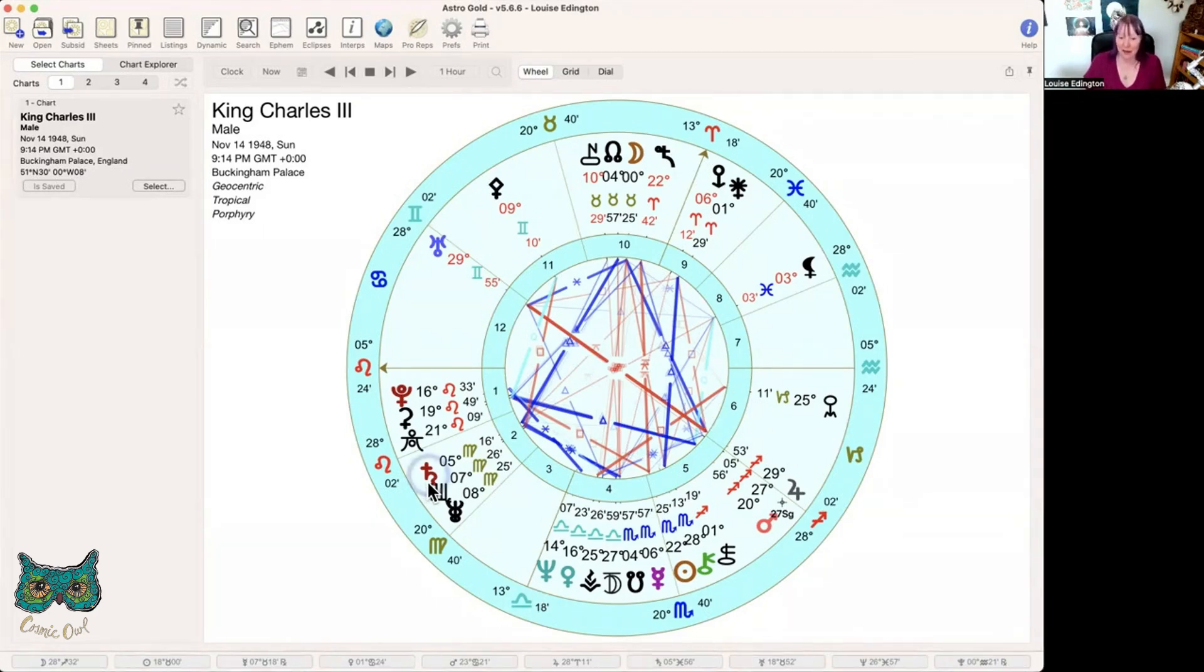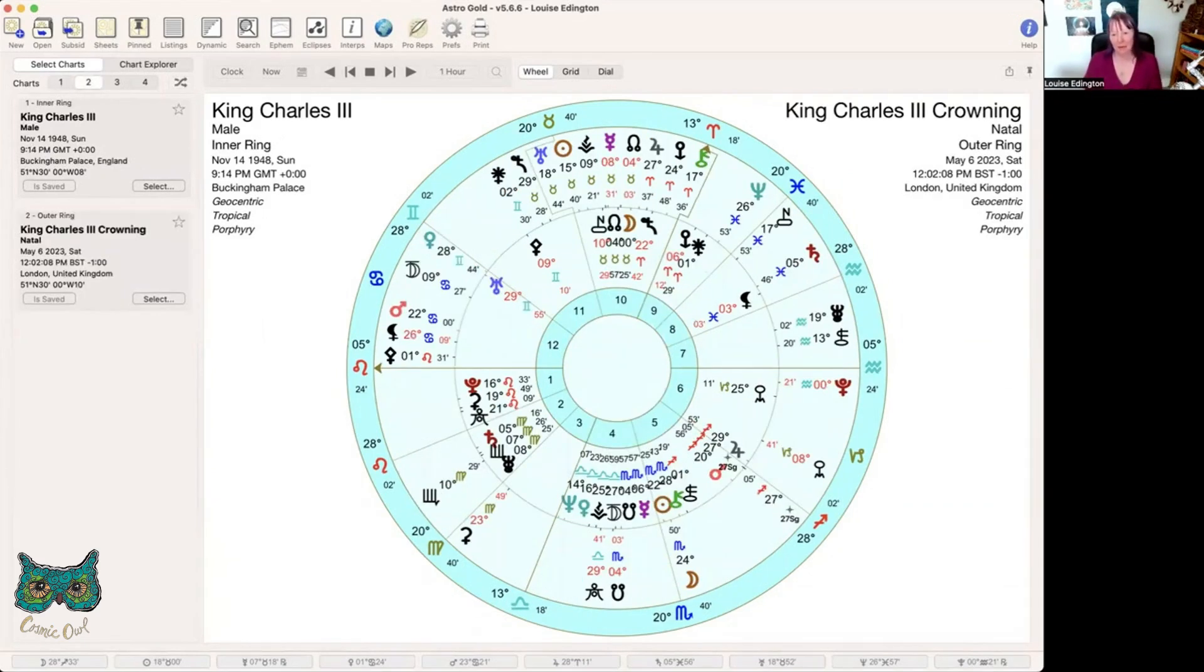He has Saturn in Virgo in that second house. He's very much called to service. His own natal Ceres is in Leo in the first house, so he's got a big heart behind his gruffness and pomposity at times and his Scorpio privacy kind of energy. He's got a Moon at zero Taurus conjunct his North Node. He was destined to take over from his mother. That's in the 10th house, the most public place in the chart.